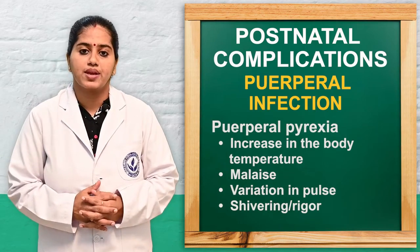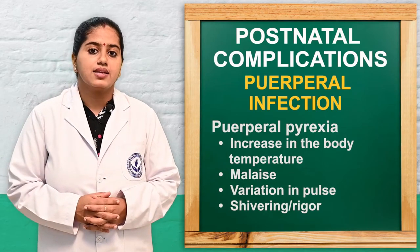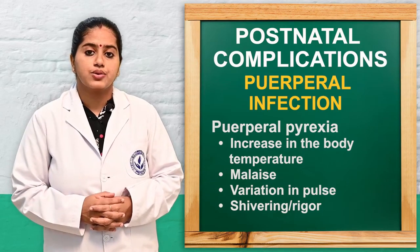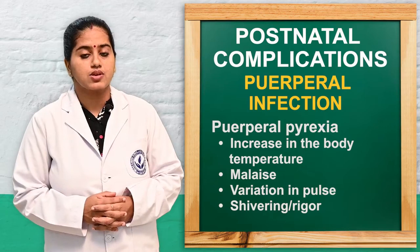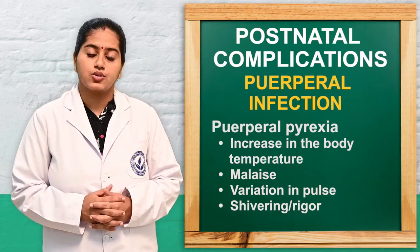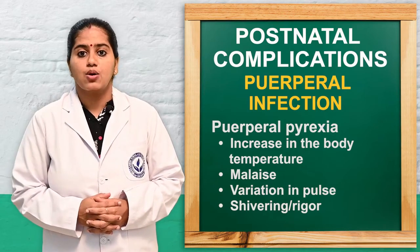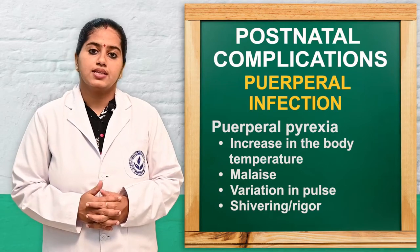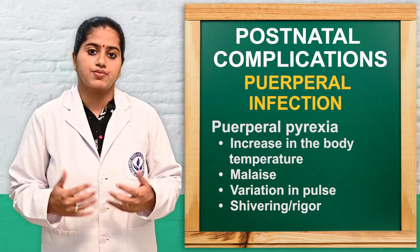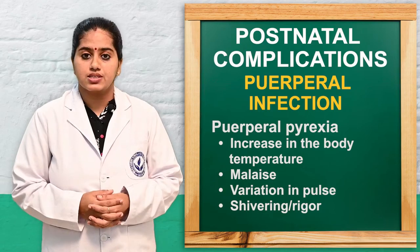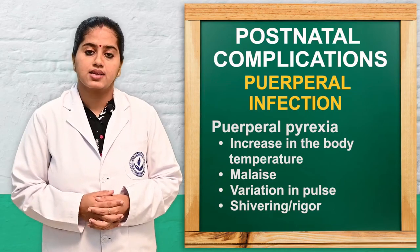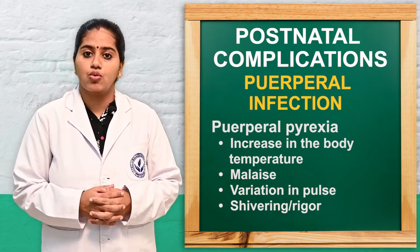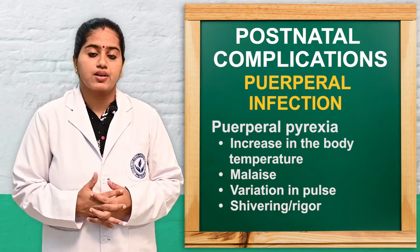The first condition is puerperal pyrexia, which is an increased body temperature due to puerperal infections. It occurs consecutively two times over a day — within 24 hours — within 10 days or one week duration. The woman may have complaints of increased body temperature, malaise, variation in pulse, and can present with shivering or rigor.